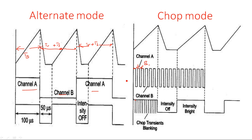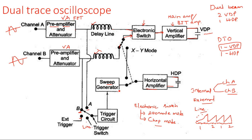In chop mode, Channel A and Channel B are selected at a very fast rate so the switch alternates between them continuously like a chop. Looking back at the block diagram, signals A and B are selected by the electronic switch in this way. Additionally, there is one more mode in the dual trace oscilloscope: the XY mode.